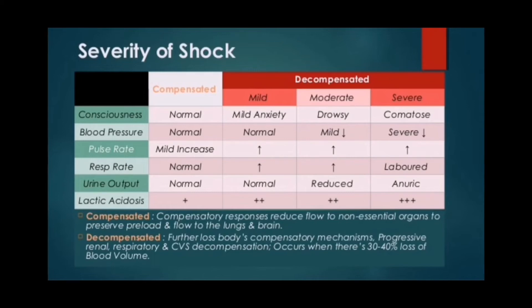Moderate decompensated shock: the patient is drowsy, there is mild hypotension, increased pulse rate, increased respiratory rate, and reduced urine output with marked lactic acidosis. In severe decompensated shock, the patient's consciousness is markedly impaired or comatose, there is severe hypotension, severe tachypnea, tachycardia with labored breathing, and absence of urine output with reduced compensatory response.